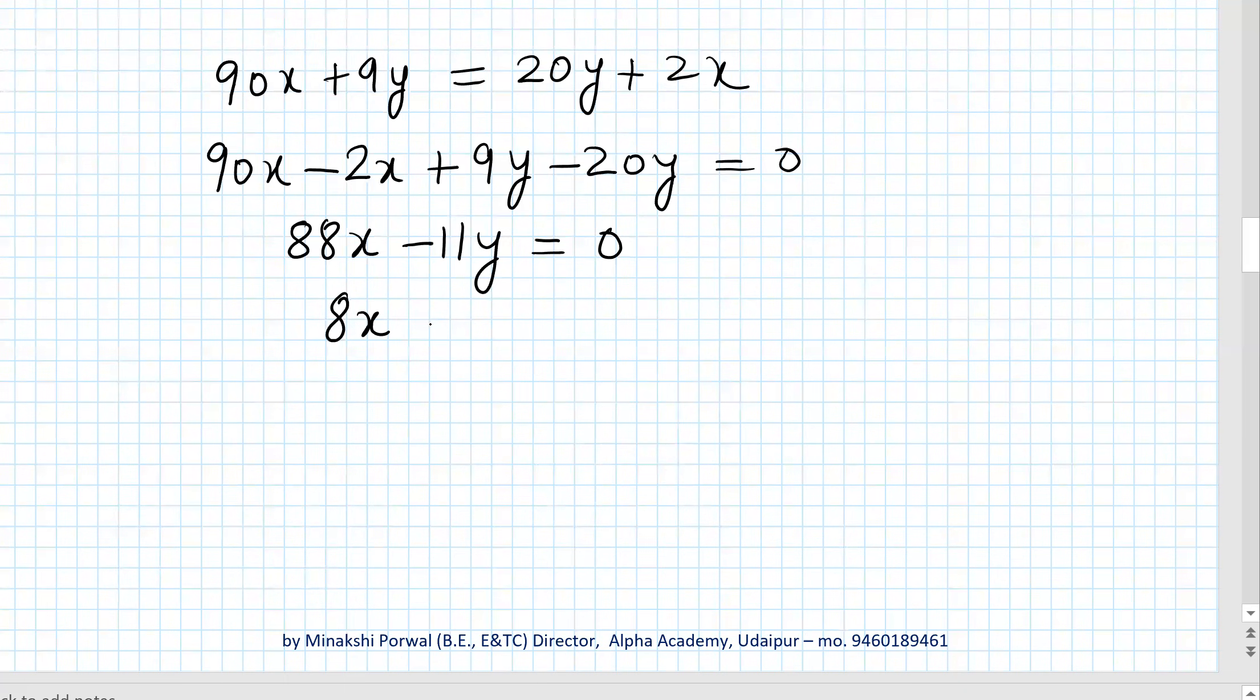So this is equal to 90x plus 9y equals 20y plus 2x. When I move everything on one side, it is 90x minus 2x plus 9y minus 20y equals 0, or 88x minus 11y equals 0. If I divide the entire equation by 11, 8x minus y equals 0. Let this be equation 2.